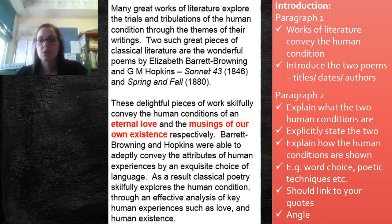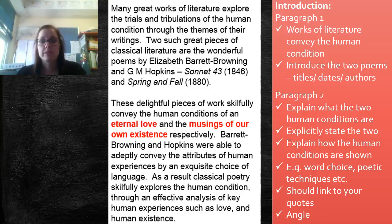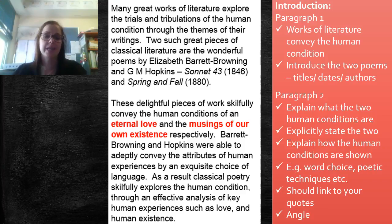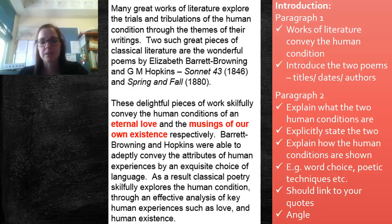After we introduce your feature article topic through your abstract, we then move into an introduction. We have a paragraph that explains the works of literature and how they convey the human condition and you're going to introduce the two poems by title, date and author. It's important to understand that within a feature article genre, we have a number of short paragraphs. You need to make sure that you will leave a space in your writing that shows your paragraphing. For paragraph two, you need to explain what the two human conditions are, explicitly state the two, explain how they are shown, think about what's your evidence, is it word choice or poetic techniques. You need to link to your quotes and obviously have a clear angle.